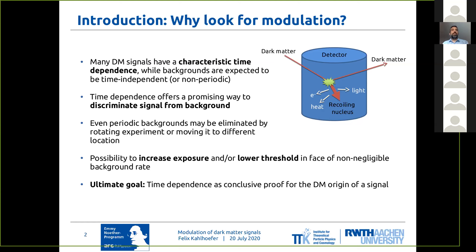So in principle, the idea of looking for a modulation offers the possibility to substantially increase the exposure of an experiment or to lower the threshold, even if that means having a non-negligible background rate.